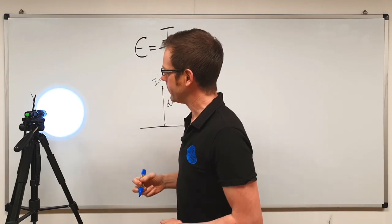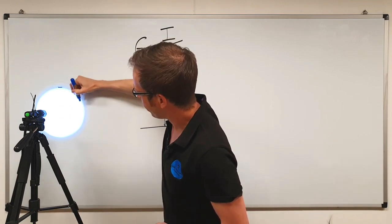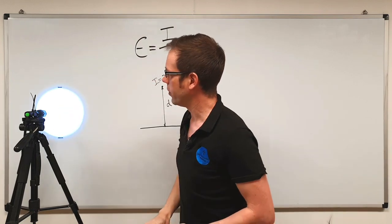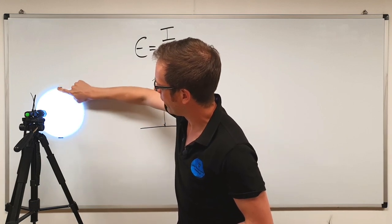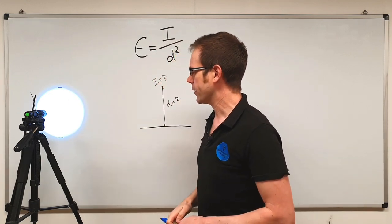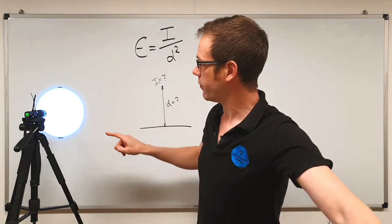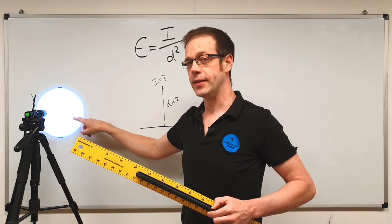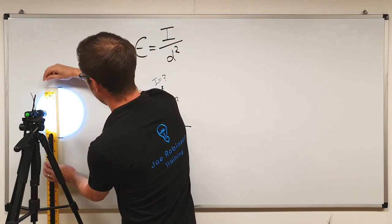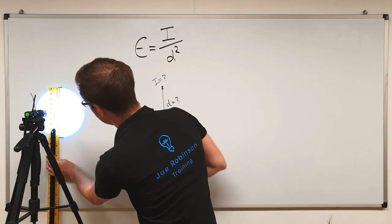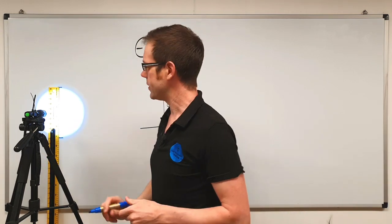What's quite interesting is if we mark out the diameter of that pool of light — looking at the distance from one side to the other, using the point where the light really starts to drop off as our reference — we can measure that distance and figure out what area is being illuminated. Measuring that up, it comes out at 26 centimetres.